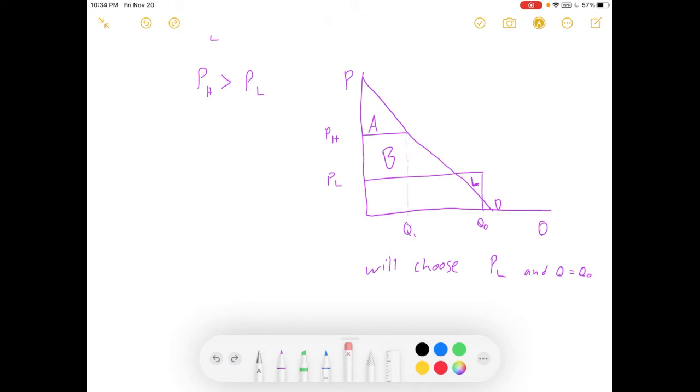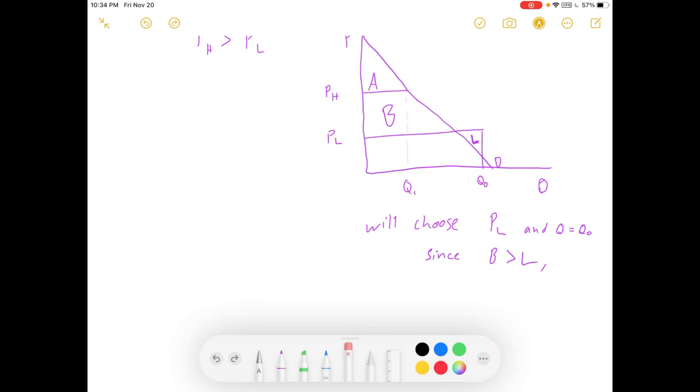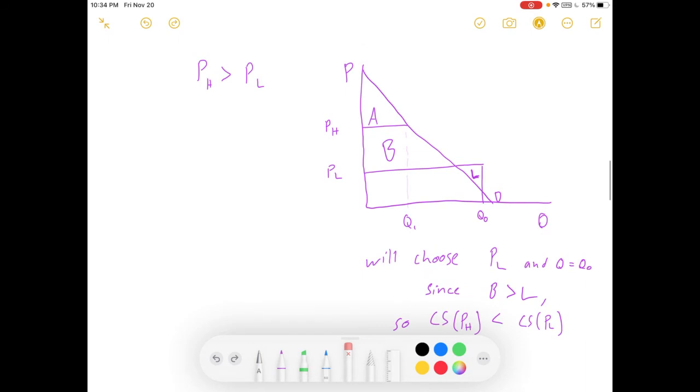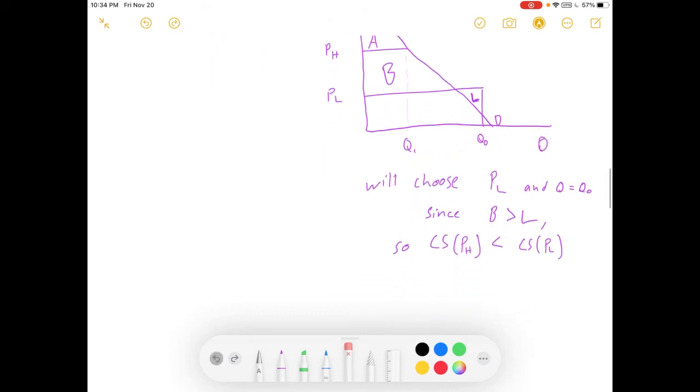This consumer would probably end up choosing PL and buying Q0 units of the good. Why? If they choose the high price, then they'll buy Q1 units. And they'll get consumer surplus of A. If they choose the low price, they'll pick up all of B, that big trapezoid shape. And they're going to buy a little bit of a good that's outside of their demand curve. They're going to lose that area L. Because for those units of the good, on that side of the curve, they're paying more than it's worth to them. But the gains for the rest of their transactions outweigh the costs.